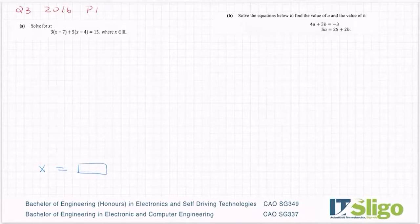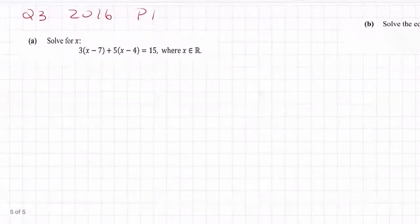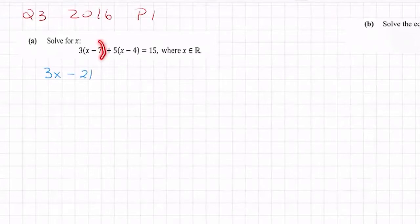Brackets means multiply, so let's multiply what's in the bracket by that 3. So I have 3 by x is 3x, 3 by minus 7 is minus 21. I'm done with the 3, then once that bracket closes I'm into plus 5 by everything in that second bracket. So plus 5 by x is plus 5x, plus 5 by minus 4 is minus 20 equals 15.